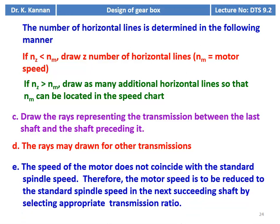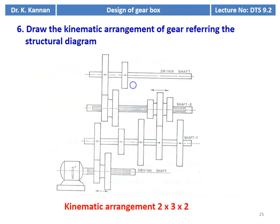Then draw the kinematic arrangement — the third drawing required in gearbox design. In the kinematic arrangement for a 2×3×2 configuration, the motor shaft is the driving shaft and there is a driven shaft. There are two speed changes in the first stage, three different speeds in the second stage, and two different speeds in the third stage. By shifting the gear, we can get different output speeds on the driven shaft.